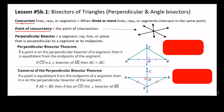Let's talk about some vocabulary words: concurrent and point of concurrency. Whenever you have three or more lines, rays, and segments that intersect in the same point — for example, in this drawing right here we have three lines that intersect in the same point — then we say these lines are concurrent to each other. And we also say that this point where they meet, where they intersect, is called the point of concurrency.